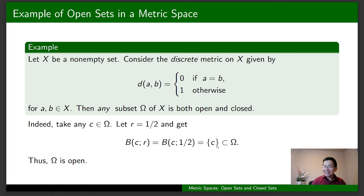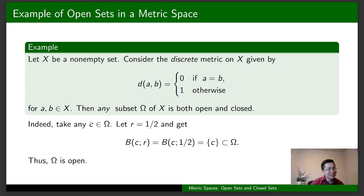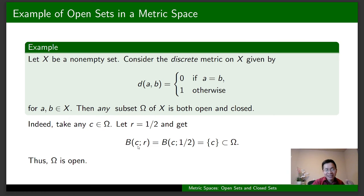Please look at the link in the description below to understand why the open ball centered at c with radius 1/2 is just {c} in this situation. Because c is in Omega, this single point set is a subset of Omega. To summarize, we take any c in Omega and show that there exists r greater than zero such that the open ball centered at c with radius r is a subset of Omega. Therefore Omega is open.